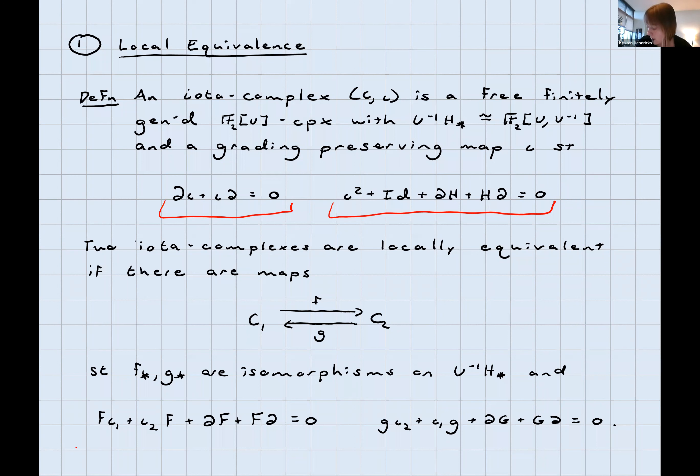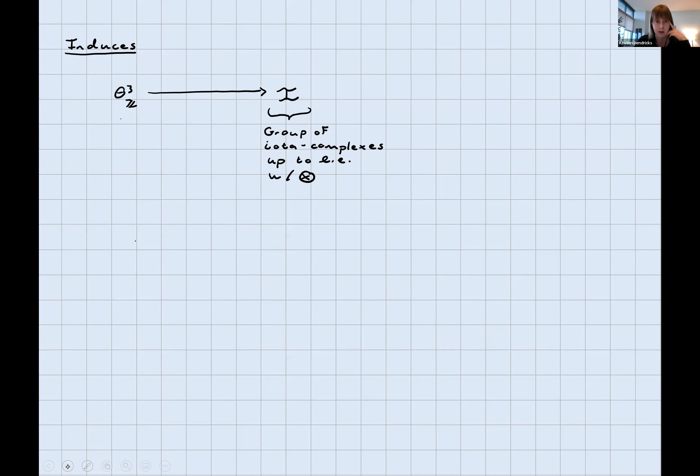Two iota complexes are locally equivalent if there are maps in both directions between them that induce isomorphisms on the localized homology and that commute up to some chain homotopy equivalence with the involutions on either side. This is a weaker notion of equivalence between iota complexes. Why is it a nice notion to think about? It turns out that homology cobordisms induce local equivalences between the iota complexes associated to the manifolds. Furthermore, because of what we said about connect sum and tensor product playing nicely with each other, this gives a homomorphism from theta 3Z, which we recall is a complicated group full of topological things, to the group of iota complexes up to local equivalence with the group operation given by the tensor product operation. That's encouraging. However, it's not as great as we might hope. It turns out this group written i tilde is still fairly complicated. It's, for example, got two torsion. It's a little bit difficult to understand.